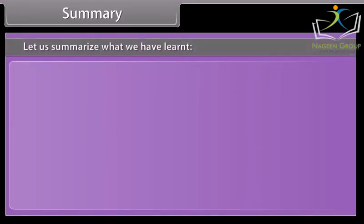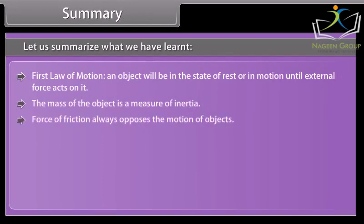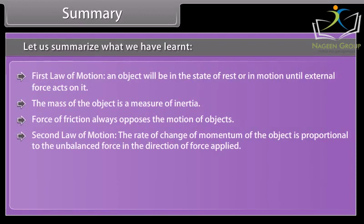Let us summarize what we have learned. First law of motion: an object will be in the state of rest or in motion until external force acts on it. The mass of the object is a measure of inertia. Force of friction always opposes the motion of objects. Second law of motion: the rate of change of momentum of the object is proportional to the unbalanced force in the direction of force applied. The SI unit of force is kilogram meter per second square. Third law of motion: every action has equal and opposite reaction.